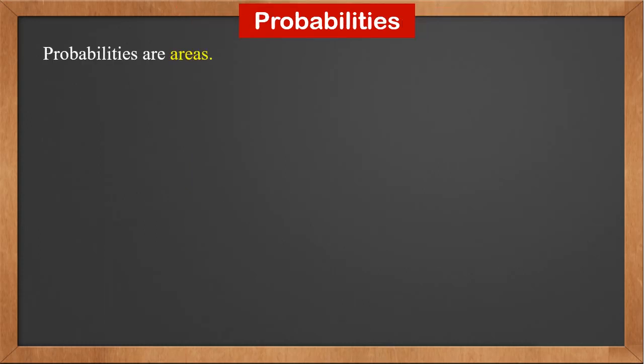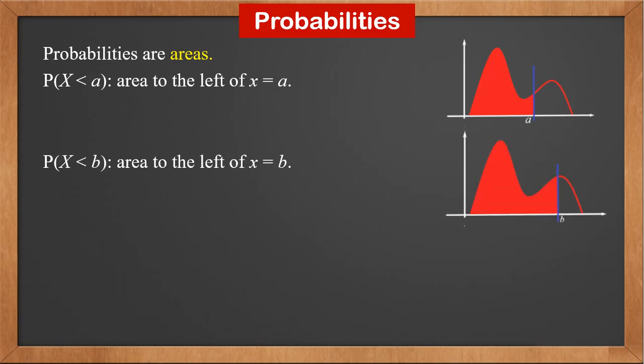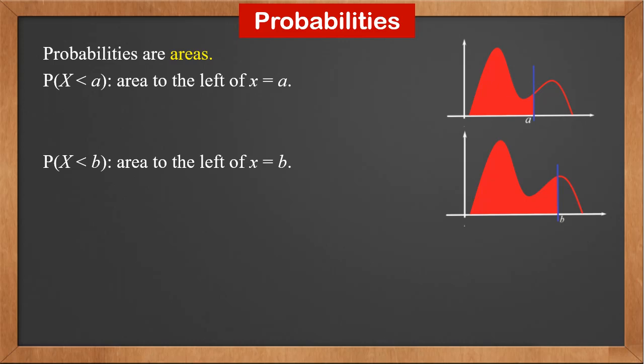In continuous probability distributions, probabilities are areas. The probability of x less than a is the area to the left of x equals a. The probability of x less than b is the area to the left of x equals b.